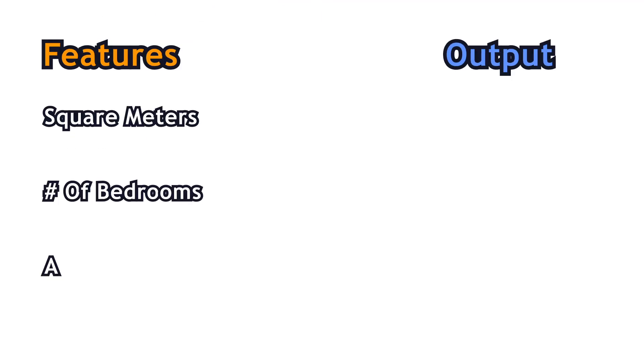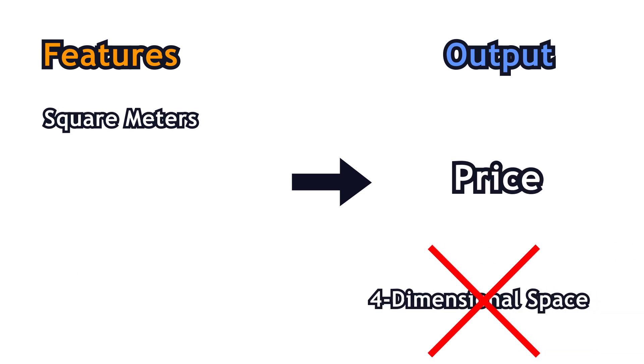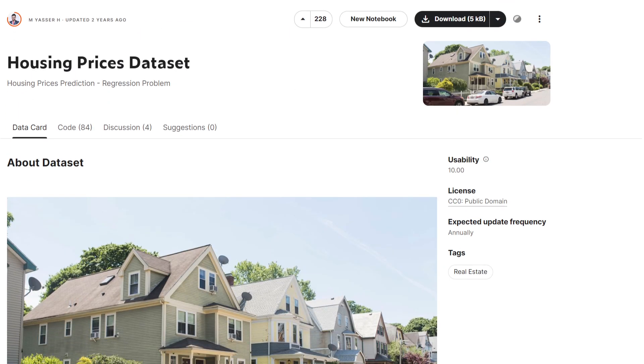Let's visualize the learning procedure. Because we can't visualize four-dimensional feature space, I will take square meters as the input feature and try to predict the house price. The dataset link can be found in the descriptions.